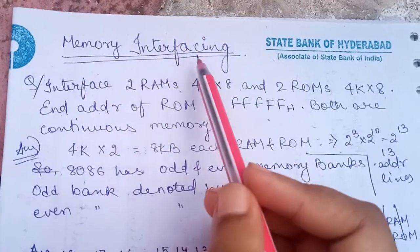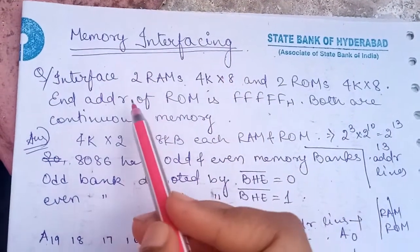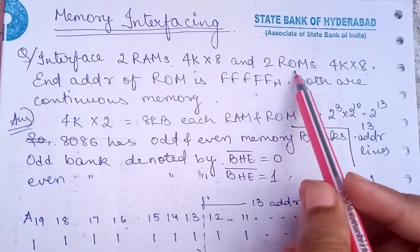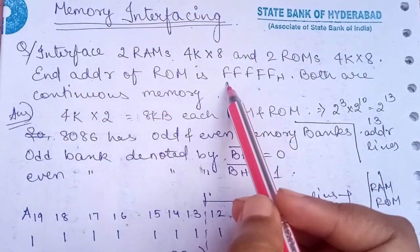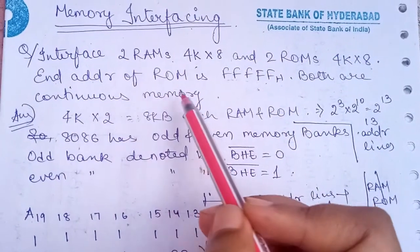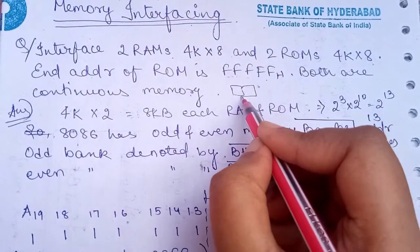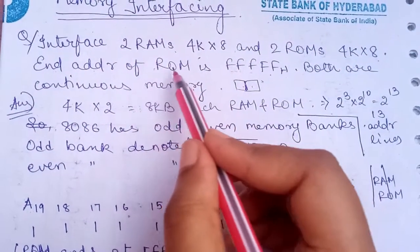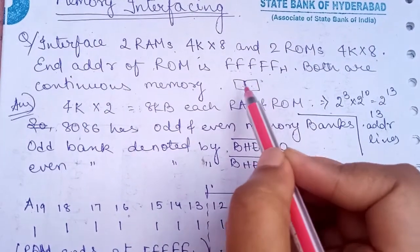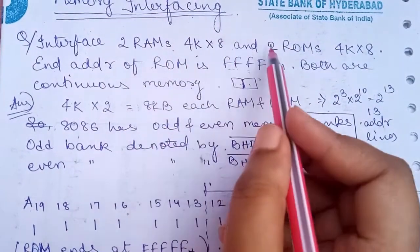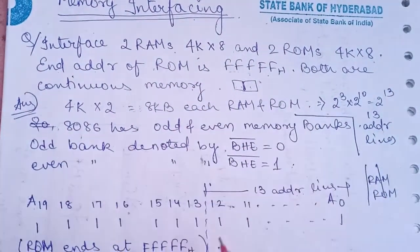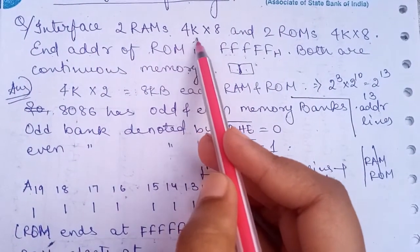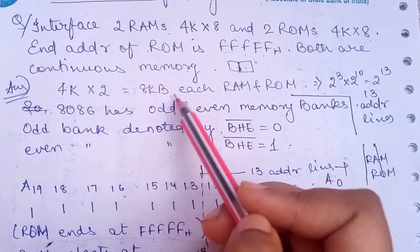This video is about memory interfacing for the 8086. The question is to interface 2 RAMs of 4K×8 and 2 ROMs of 4K×8, where the end address of the ROM is given, and both are continuous memory — meaning RAM and ROM are contiguous. We have to show the diagram of how the RAM and ROM are connected, and how addressing is done. Total memory is 4K×2 = 8KB each for RAM and ROM.